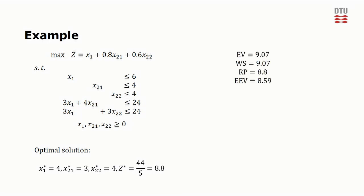We can now write up all the values we have found and see that EVPI is in fact 0.27 and VSS is 0.21. This is of course a bit lower than the upper bound of 0.48. But in this case, the gap between EV and EEV is split between the recourse problem and the wait and see solution.